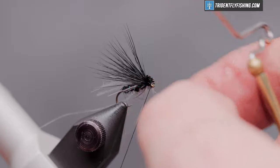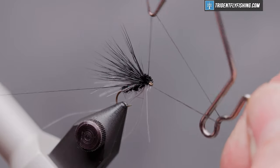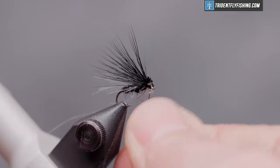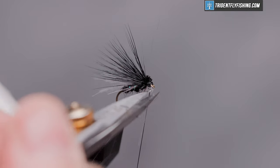Take our whip finish tool. Do a four or five turn whip finish. Seat the knot. Cut our thread.